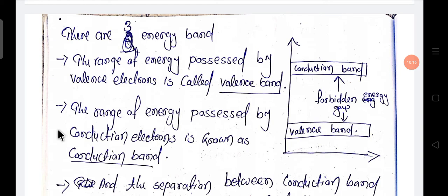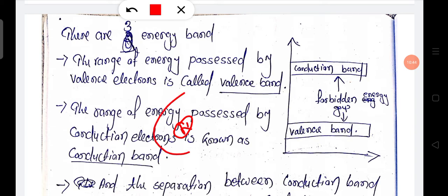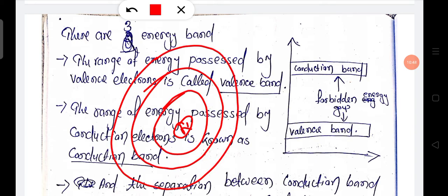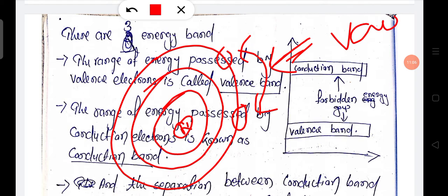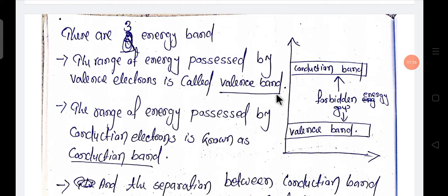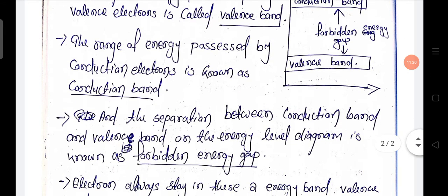Now this band — there are three energy bands. The first one is the energy range possessed by valence electrons, called the valence band. You know what a valence electron is — the outermost orbit electrons of any atom are called valence electrons. The energy range possessed by these outermost electrons is called the valence band. The second band is called the conduction band.